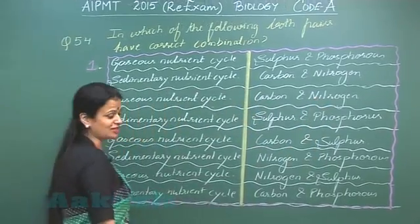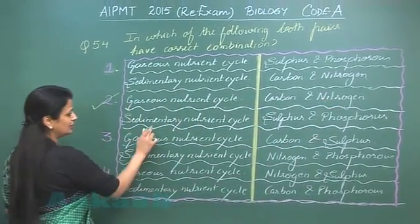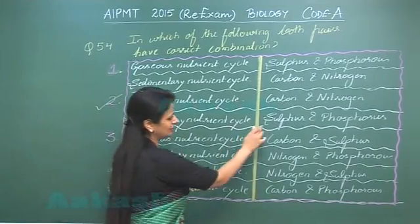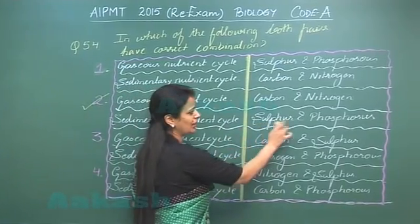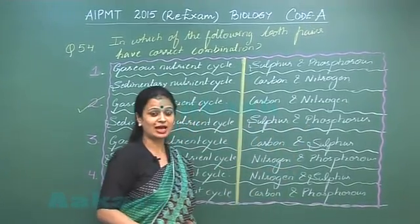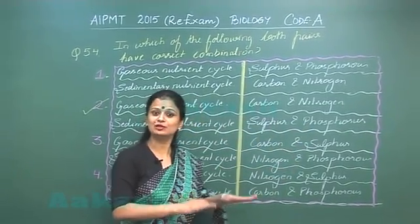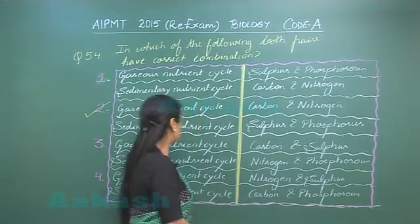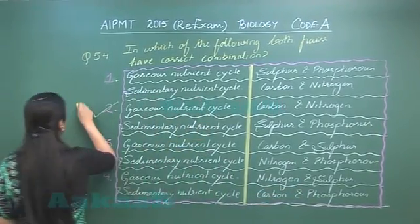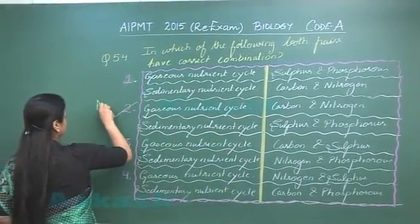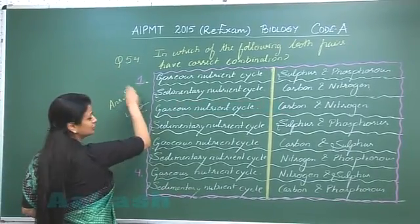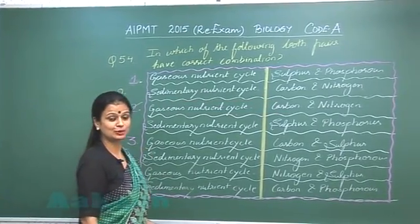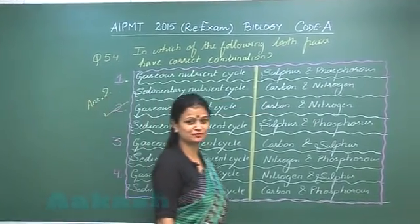Carbon and nitrogen follow gaseous cycles. For the sedimentary nutrient cycle, examples are sulfur and phosphorus, which have the lithosphere as their nutrient pool. So the right option here is option number 2. Now let's see question number 55.